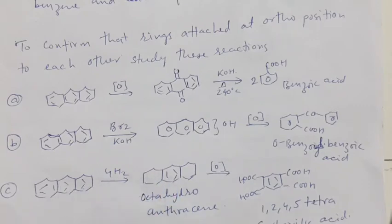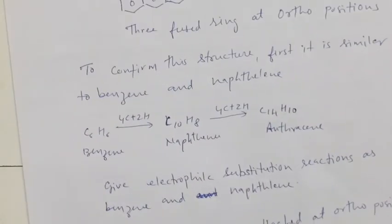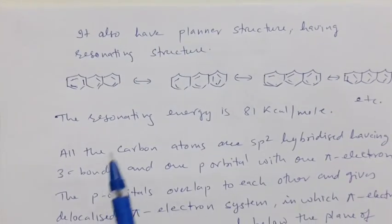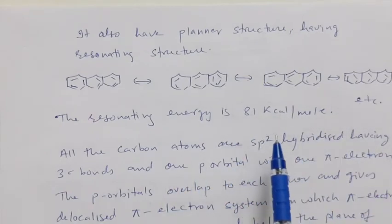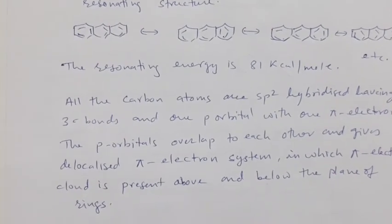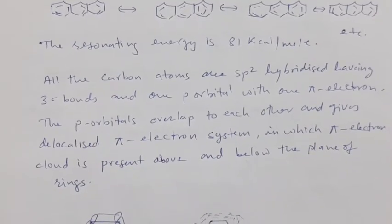All three rings are aromatic and they are attached to each other at the ortho position. Anthracene has a planar structure with resonating structures. The resonance energy of anthracene is 81 kilocalories per mole, which is less compared to benzene and naphthalene, so anthracene is less stable than benzene and naphthalene.